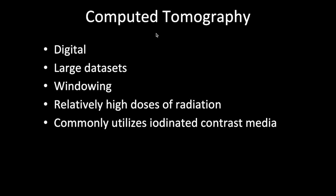CT, like MRI and other digital imaging, uses large data sets. There's a concept of windowing, which allows you to set various imaging parameters so that you can look at various types of structures — lung window settings for lung, bone window settings for bone, soft tissue settings, and so on. But remember, CT utilizes pretty high doses of radiation and commonly uses contrast media, both of which can pose risks to the patient. So we need to be mindful about doing CT scans and making sure there is a good indication.